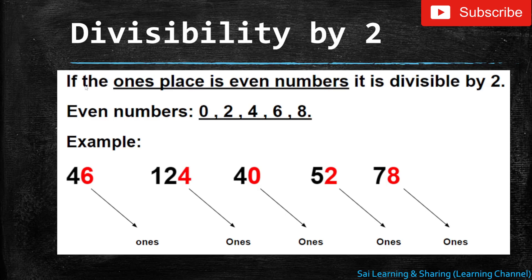Now if the one's place is an even number, it is divisible by two. As you see here, I have given a few examples. The first one is 46. In the one's place it is written 6. Hence 6 is an even number, so 46 is divisible by two.